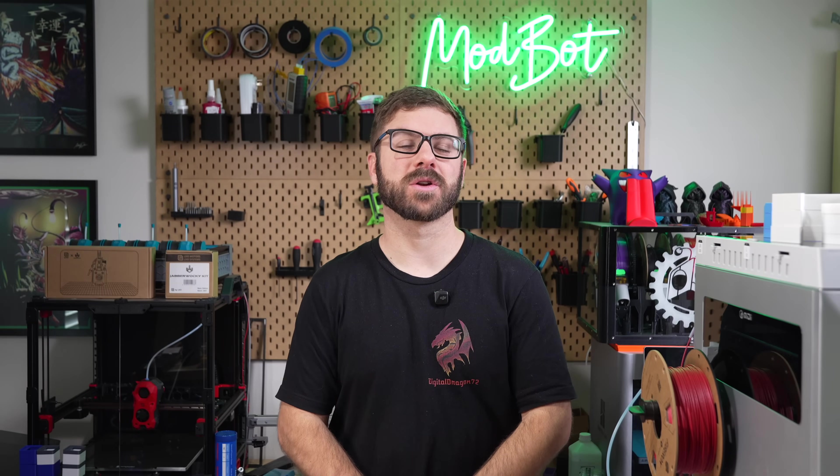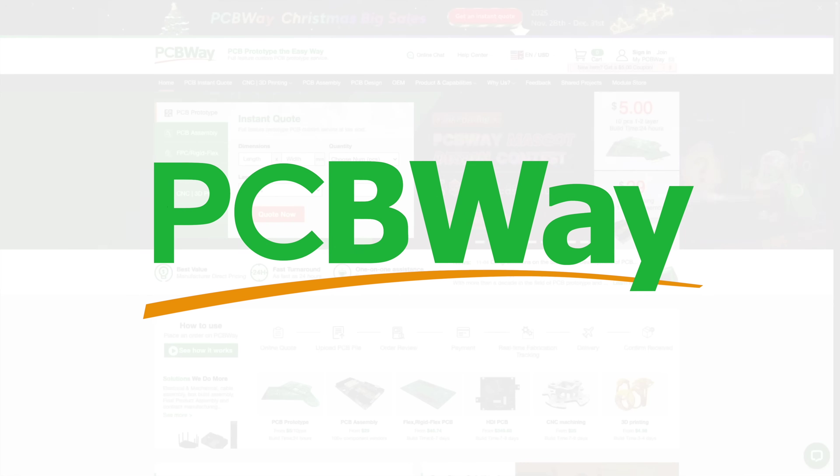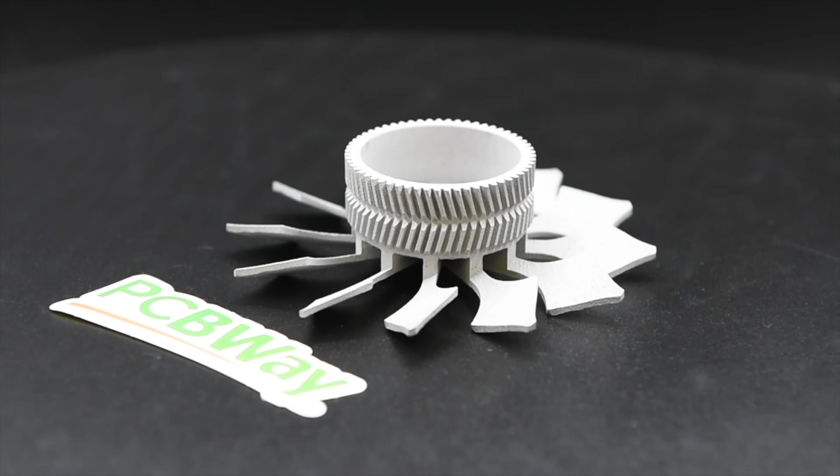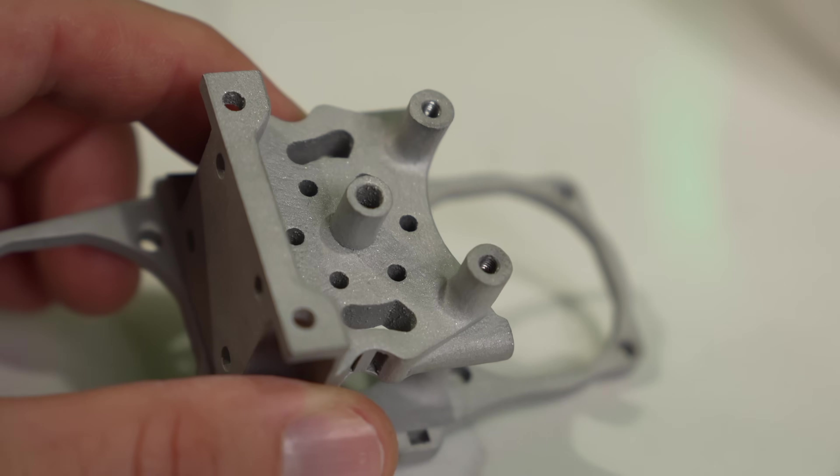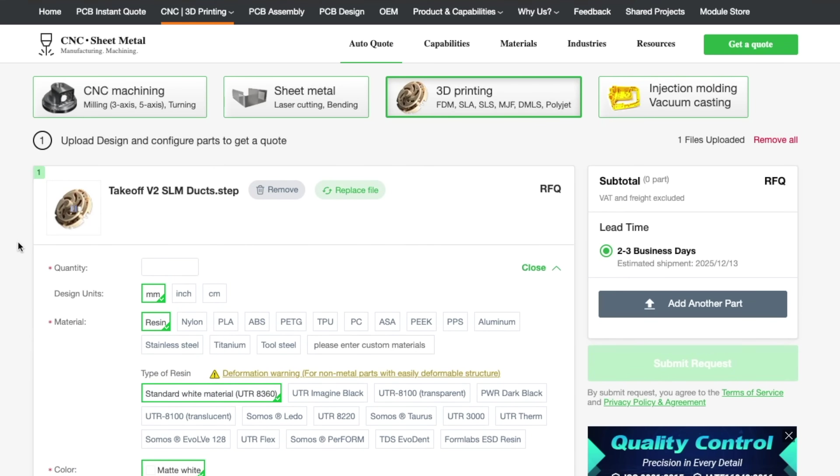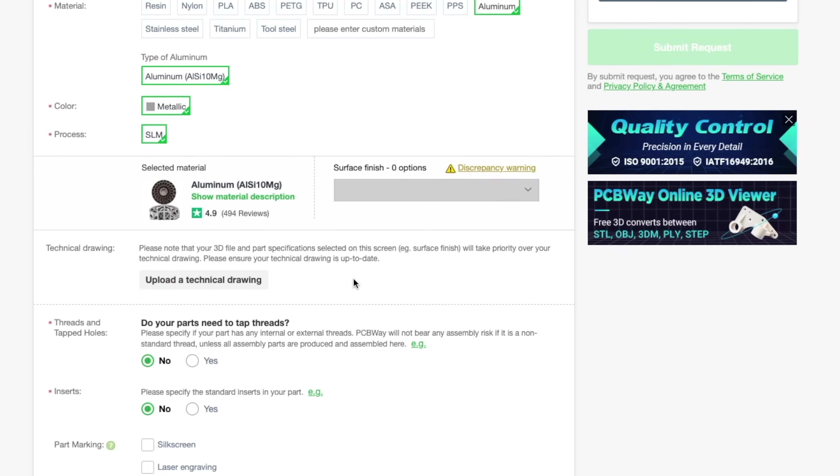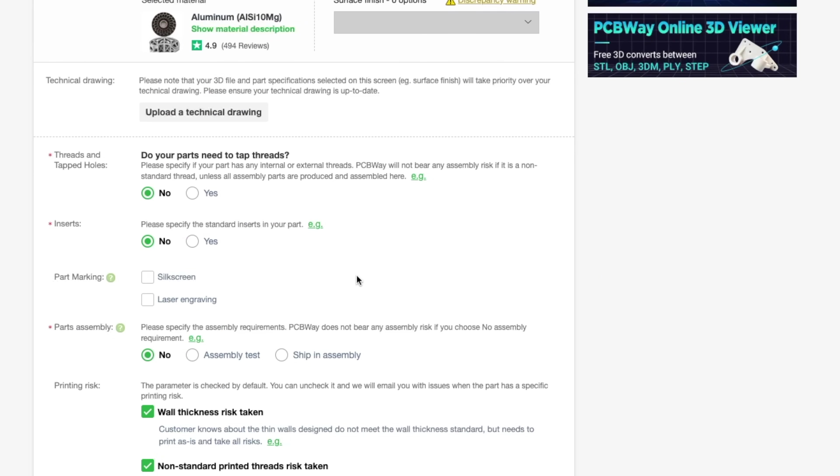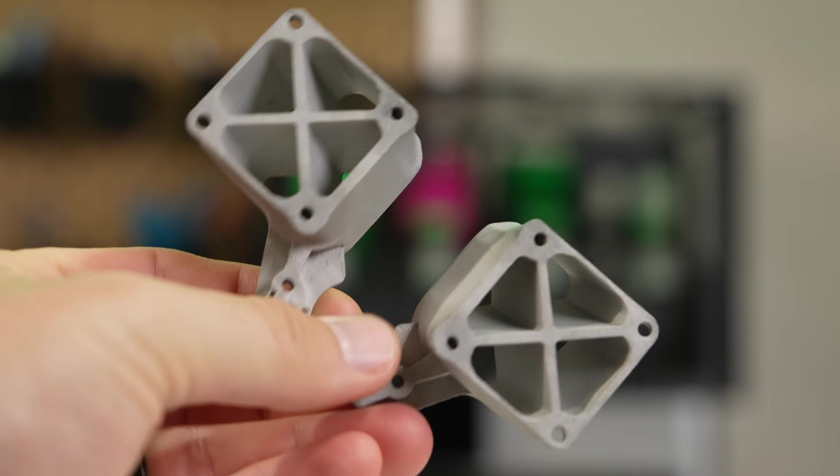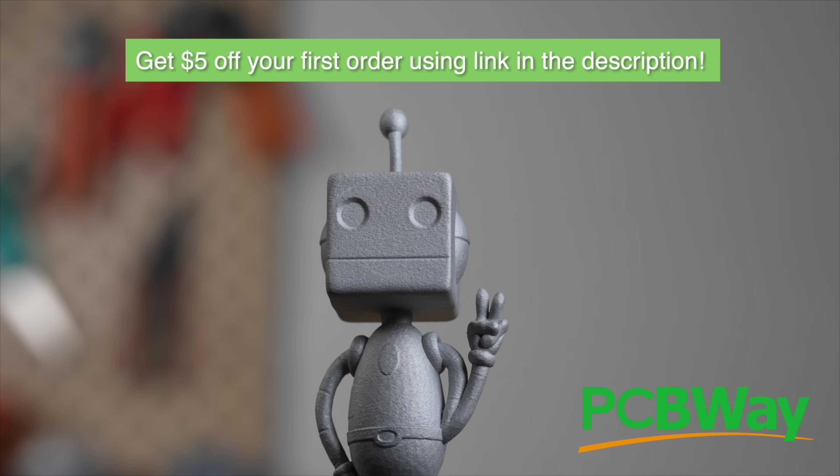If you need parts for your project, but don't have the ability to print them yourself, then today's video sponsor PCBWay has you covered. From nylon and polycarbonate to PEEK and steel, PCBWay is your one-stop shop to get all the pieces needed for your next project. Simply upload your file, choose how many parts you need, along with the specifics on material and post-processing to get a quick quote. Their engineers will even verify the validity of the part and alert you if there's any issues before processing. For projects big or small, be sure to check out PCBWay, and use the link in the description to get five dollars off your first order today.